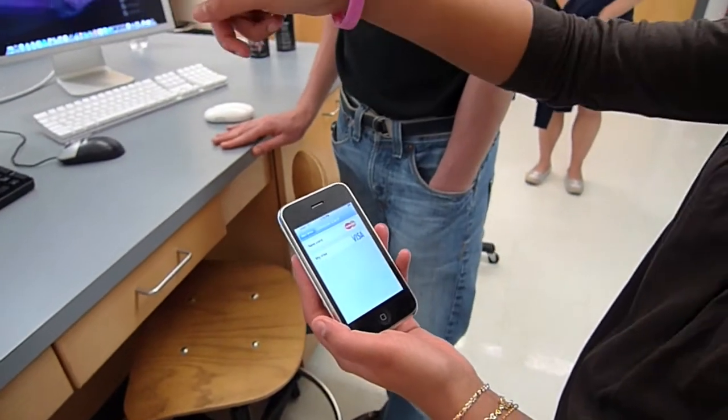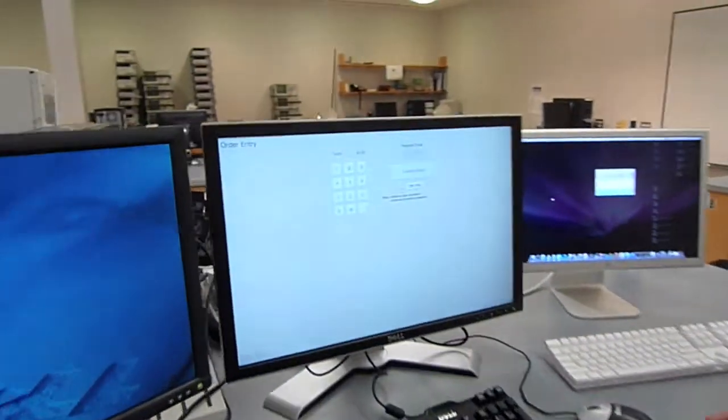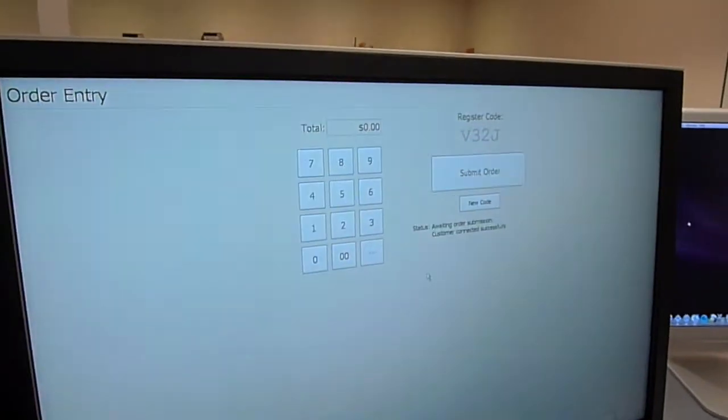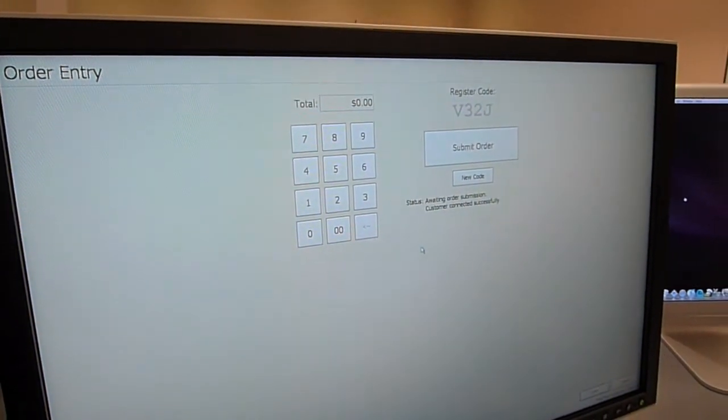So now, if you can see from the register, we're connected. And so now the register and the iPhone can communicate directly.